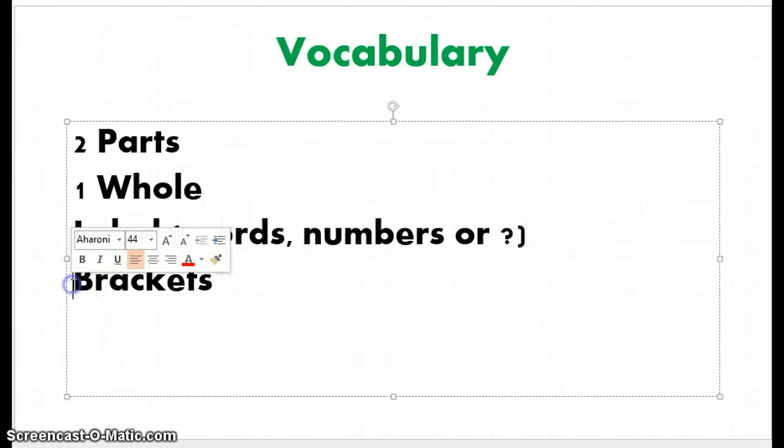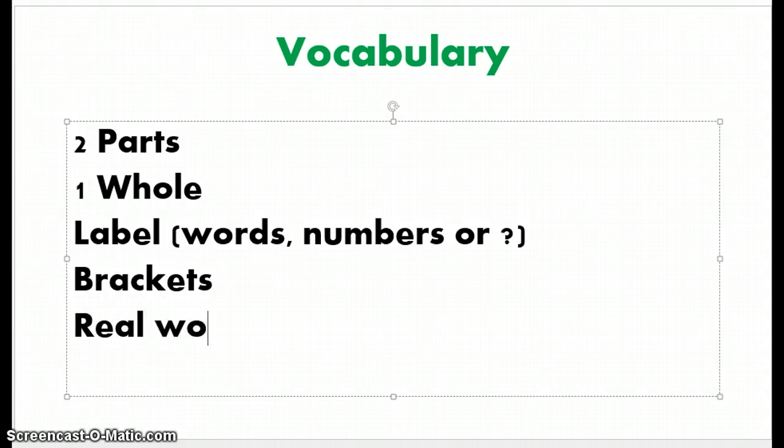The last word is brackets. Brackets are what you use to help you label the bar models. The last word that I wanted to remind you about was real world problems. Real world problems are basically just math problems written in words. Okay? So let's begin.